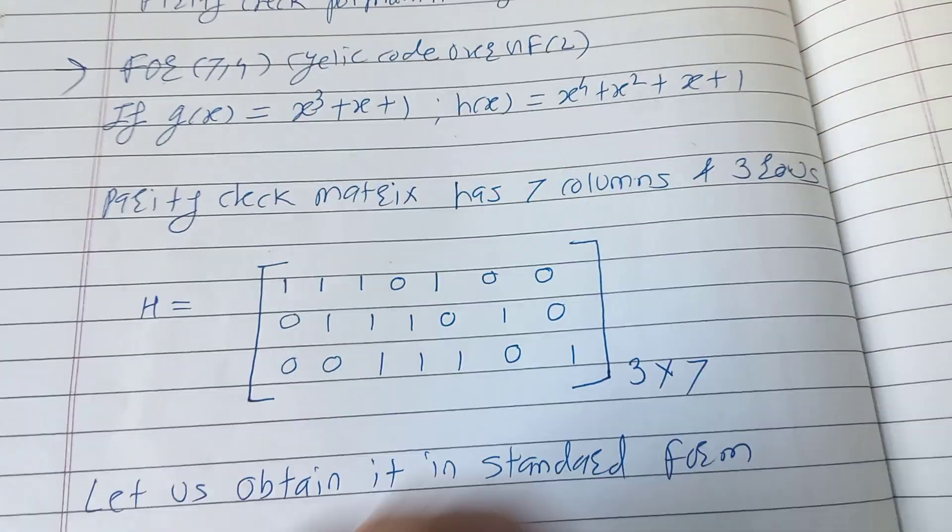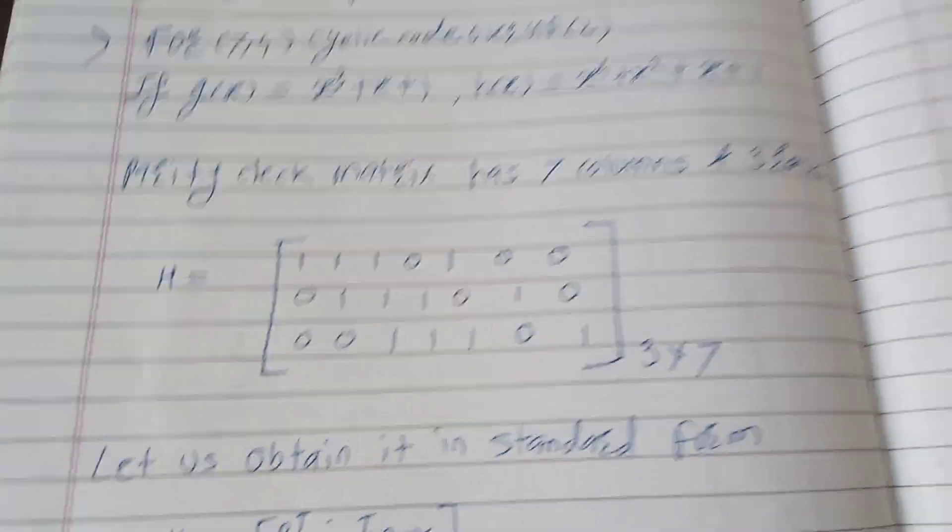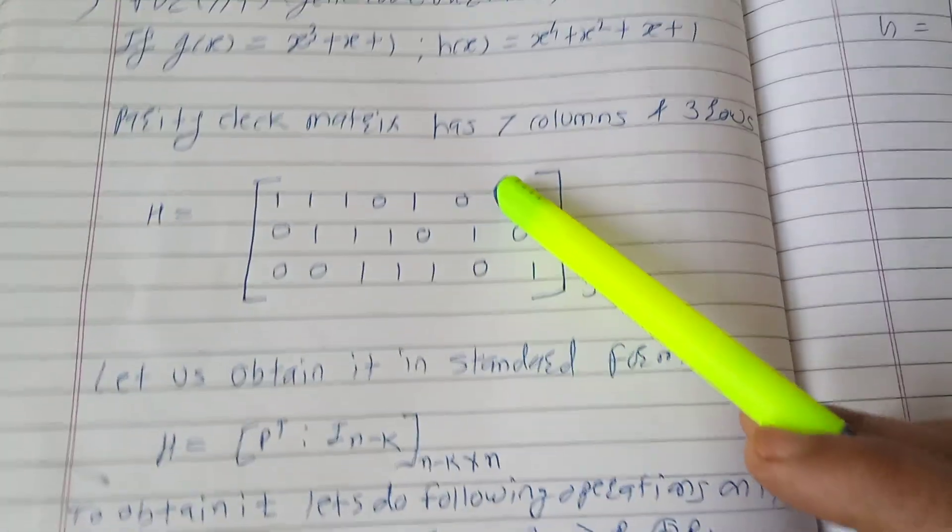This we have already seen how to obtain these. So parity check matrix you have to remember that it has 7 columns and 3 rows.